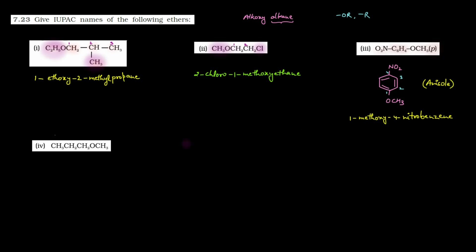Fourth part — kya given hai? CH3-CH2-CH2-OCH3. Yeh toh bahut hi simple hai. Parent chain kaun si hogi? 1, 2, 3 — teen carbon atoms ki chain hai. Aur yeh jo OCH3 hai woh kya ho jaayega? Methoxy. Toh iska naam kaise likhenge? 1-methoxy aur kyunki teen carbon atoms ki chain hai toh propane — so this will be 1-methoxypropane. Very simple.